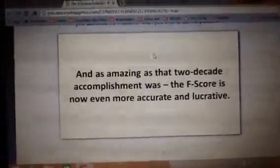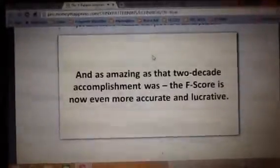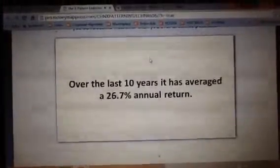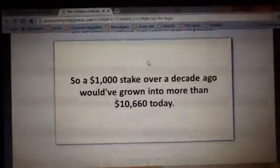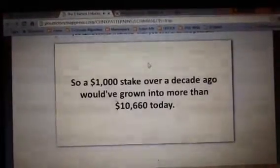And as amazing as that two-decade accomplishment was, the F-score is now even more accurate and lucrative. Over the last 10 years, it has averaged a 26.7% annual return. So a $1,000 stake over a decade ago would have grown into more than $10,660 today.